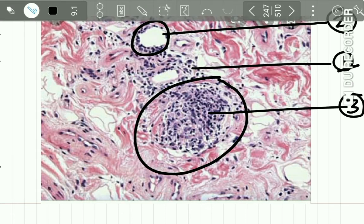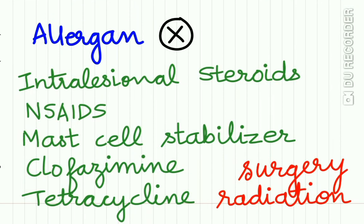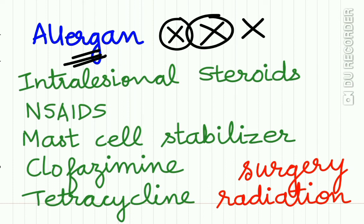For treatment, if any allergen is identified, complete abstinence is advised. Intralesional injectable steroids, NSAIDs, mast cell stabilizers, clofazimine, and tetracycline may be given. In advanced cases, surgery and radiation may be advised.